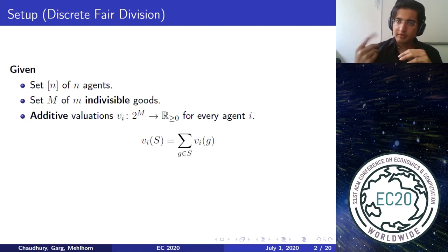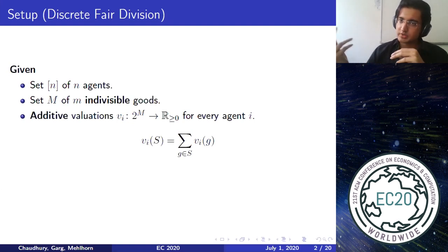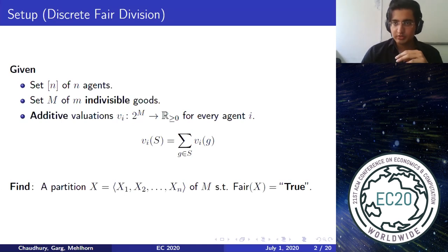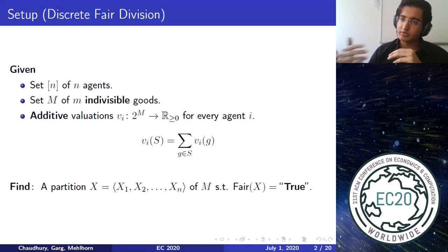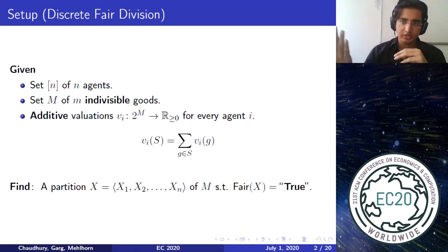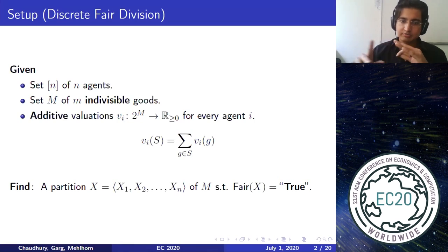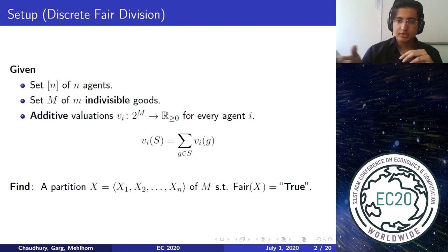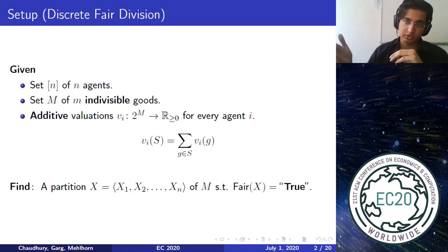In a typical setup we have agents, goods, and each agent has a valuation function. Our aim is to find a partition of the good set into N bundles X1 up to Xn, where each Xi is allocated to agent i, and I want this partition to be fair. Depending on different notions of fairness, there are several spectra of problems in fair division.